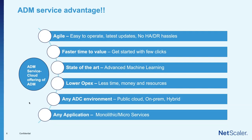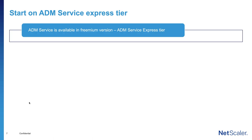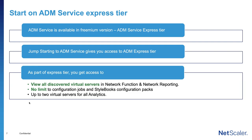When you start your journey with the ADM service, you begin with the Express tier license — a premium version. You can start with all virtual servers under network functions, network reporting open, and exclusive features like Winify and Splunk integrations. There is no limit on configuration jobs, style books, or configuration packs. You can configure as many as needed and experience all management and monitoring features from day one.